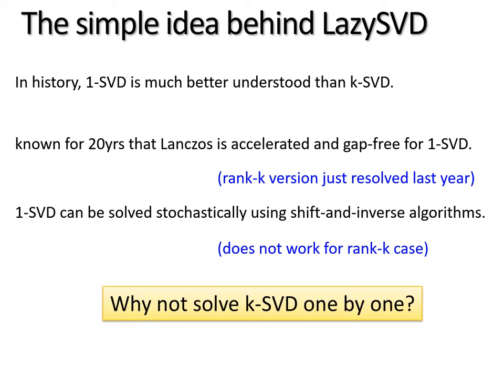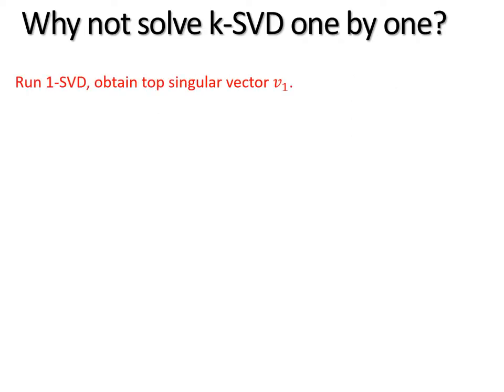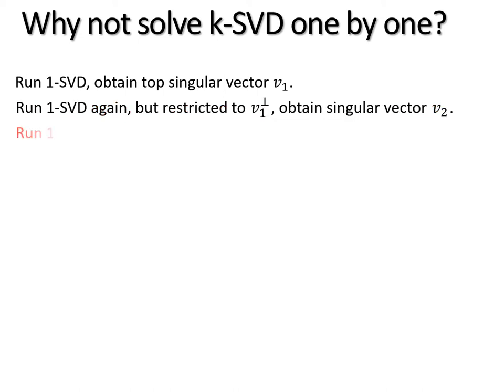So then, we ask the following fundamental question in our paper: why don't we solve kSVD just one by one? In particular, why don't we run 1SVD, obtain the top singular vector, and then run it again, but restricted to the orthogonal space of v1, obtain a second vector, then run it again, restricted to the orthogonal space of v1 and v2, and so on so forth for k iterations.